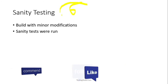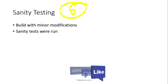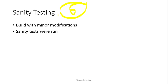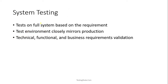The sixth type is sanity testing. There is a slight difference between sanity testing and smoke testing. Sanity testing is performed only when there is a minor modification in the build. If there are major changes we do smoke testing, but for minor changes we run sanity testing, covering only a few relevant areas.